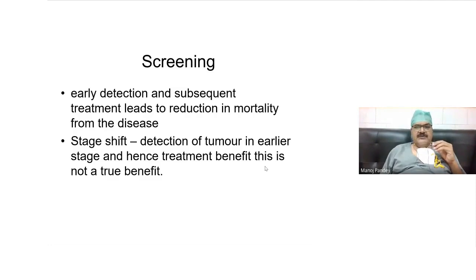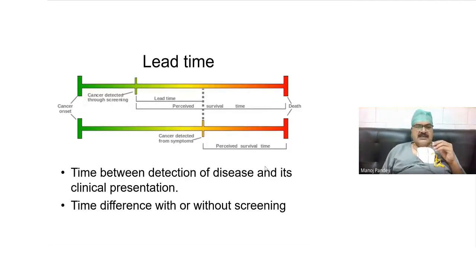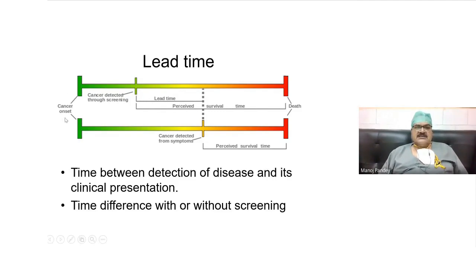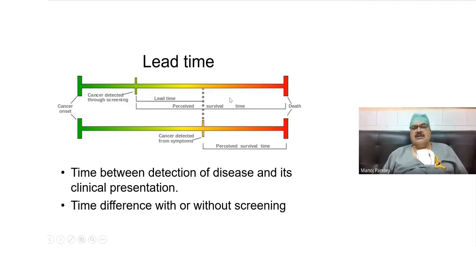But a stage shift is not a true benefit. True benefit is reduction in mortality. One term used is lead time. If you look at the line, it starts when the cancer starts and ends when death occurs. A normal patient is identified when they become symptomatic. Lead time is the period by which you detect the cancer early — the survival becomes longer and the time gained is the lead time.